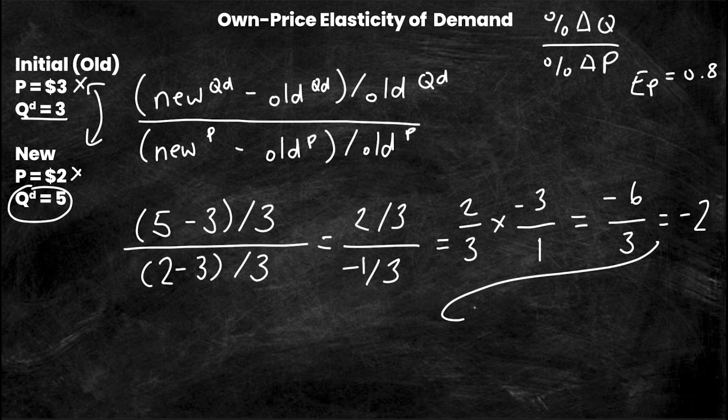Again, we are going to use absolute value, so we would say in this case elasticity is equal to 2. Absolute value, so the negative sign disappears because own-price elasticity of demand will always be negative. Is that inelastic or elastic? Well, 2 is greater than 1. Therefore the own-price elasticity coefficient is elastic.